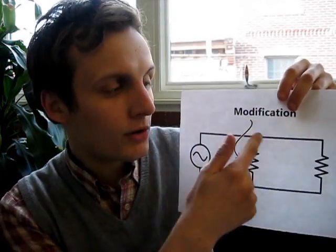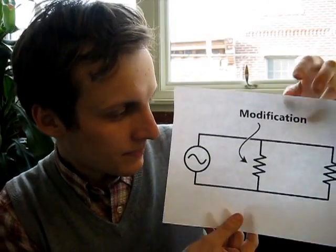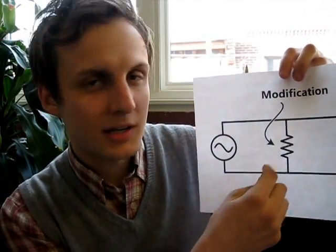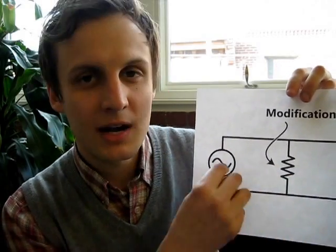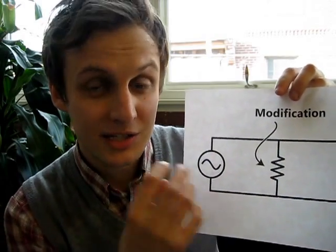So how do we change the input impedance of a mic preamp without opening it up and hacking apart the guts? There's a very easy way: we add impedance in parallel with that of the mic preamp by means of a resistor. We're reducing the ratio from 10-to-1 down to something like 2-to-1 or 1-to-1. When you add impedance in parallel, you give electrons another path through the circuit, making it more conductive and reducing the overall impedance seen by the microphone.